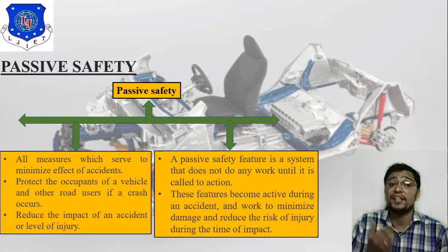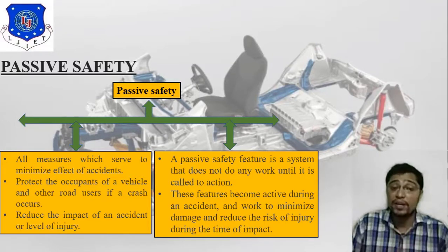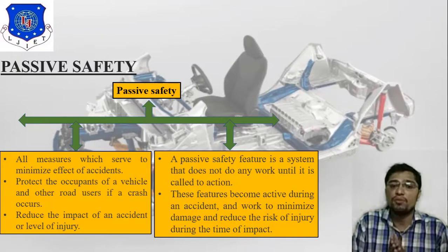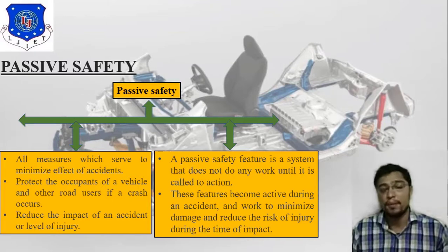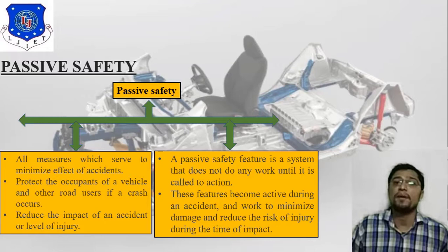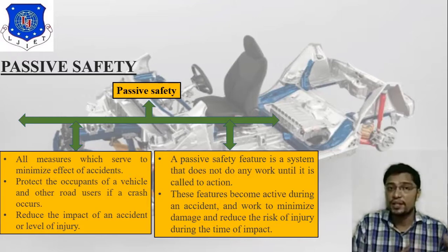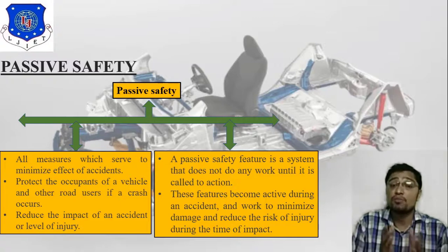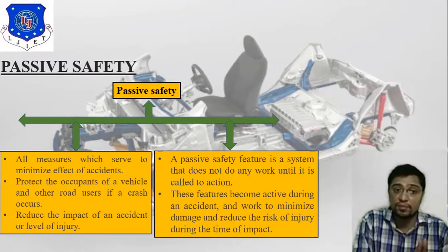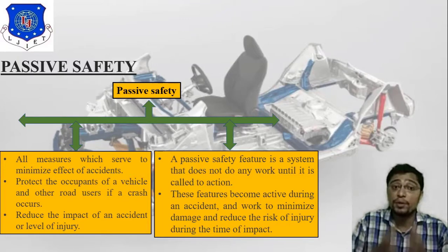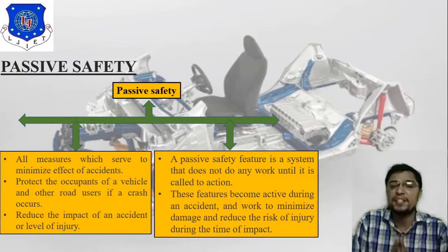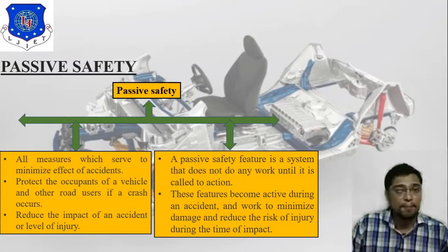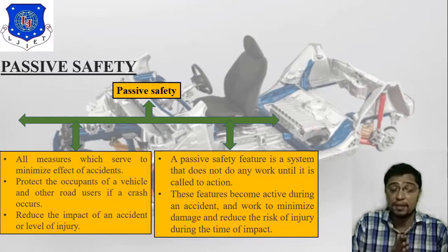A passive safety feature is a system that does not do any work until it is called to action. This feature becomes active during an accident and works to minimize the damage and reduce the risk of injury during the time of impact. Examples of passive safety include crumple zone and airbag — these are the spare parts related to passive safety.